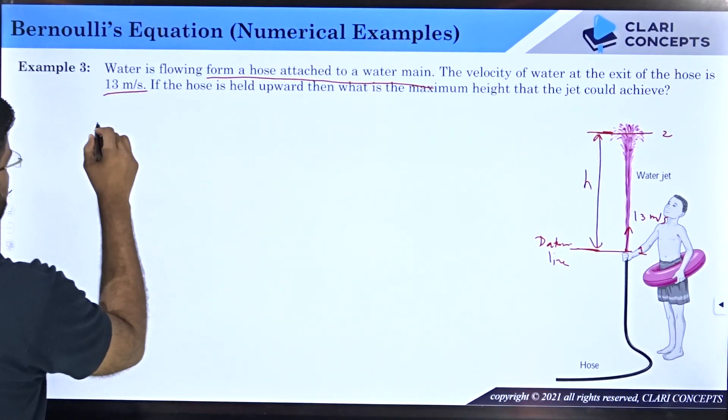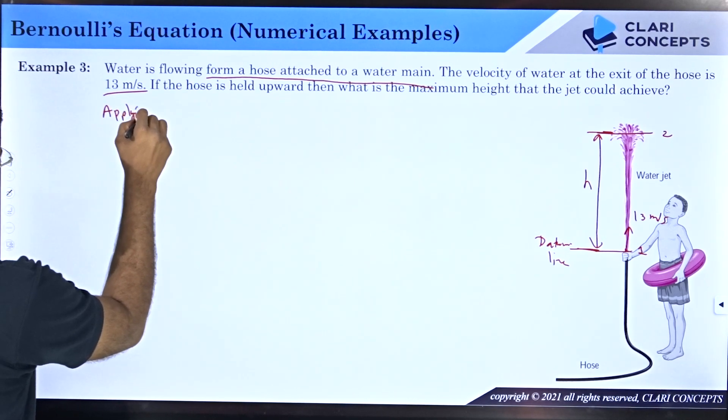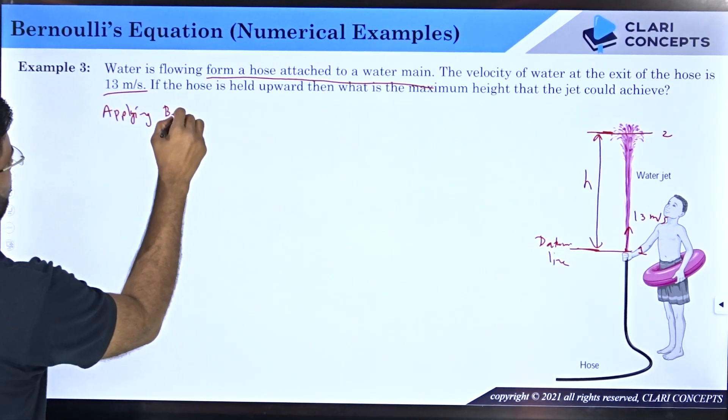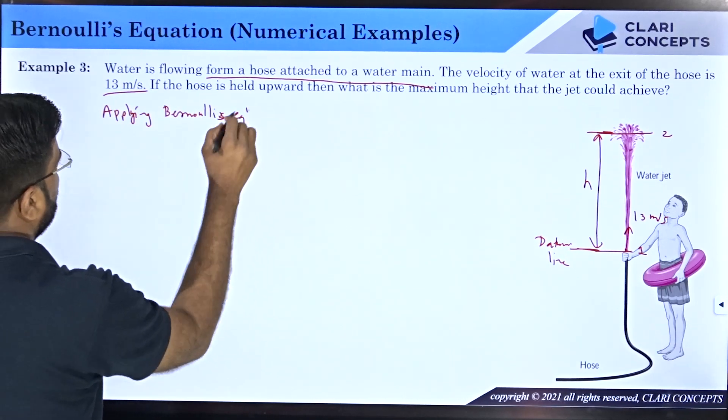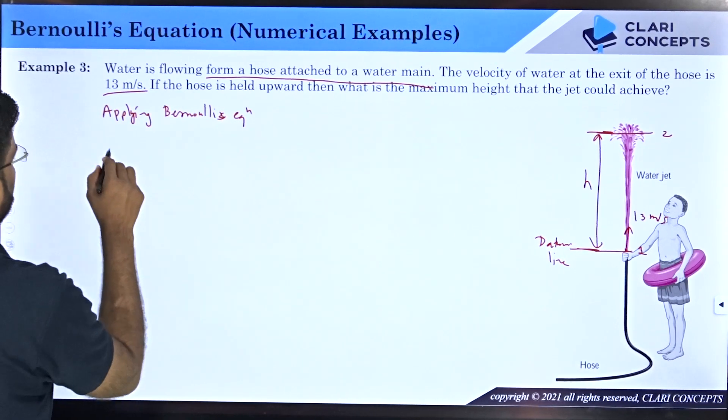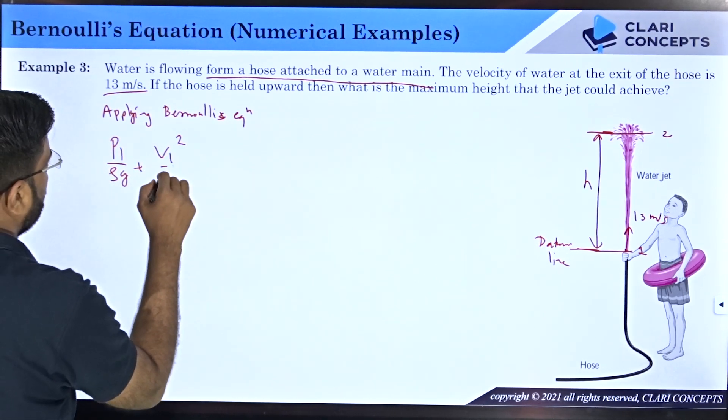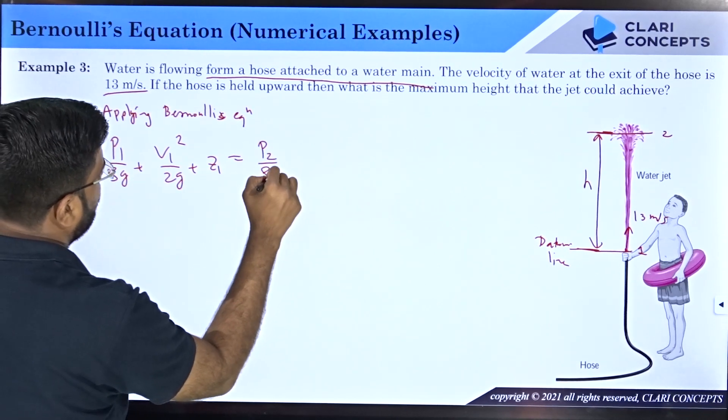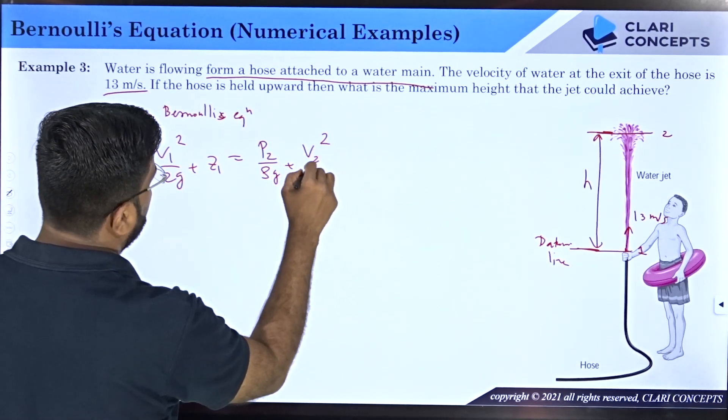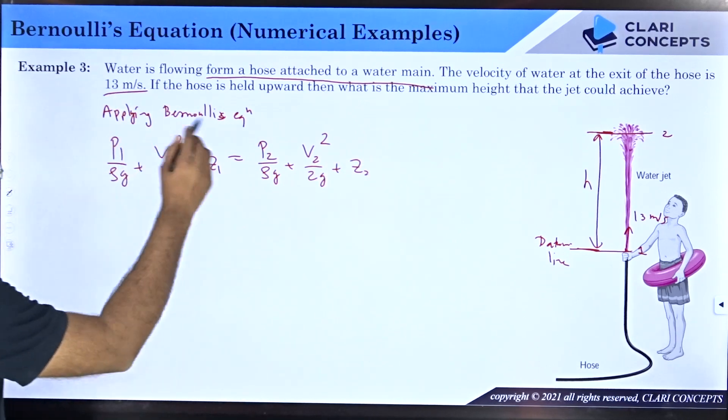Let me show you the values. If I use Bernoulli's equation applying between section one and two, I will get: p1/(ρg) + v1²/(2g) + z1 = p2/(ρg) + v2²/(2g) + z2. Let us see one by one all the terms.